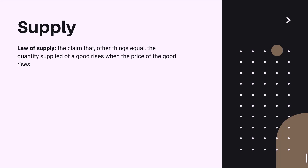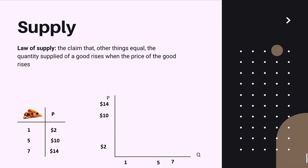We can graph this supply schedule to get the supply curve, which, in contrast to the demand curve, has a positive slope. The graph shows exactly what the law of supply states: quantity supplied increases when prices go up.